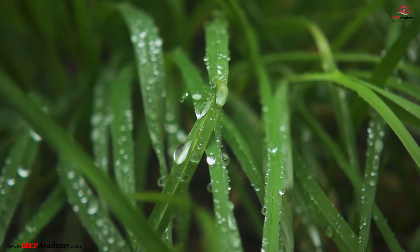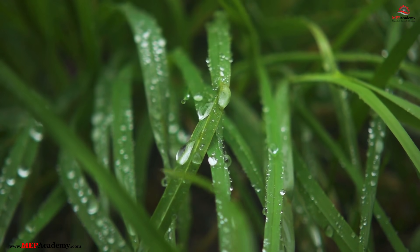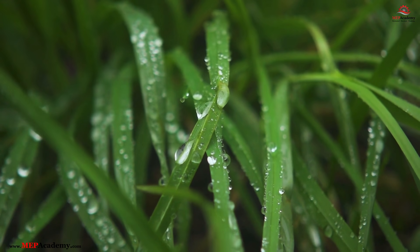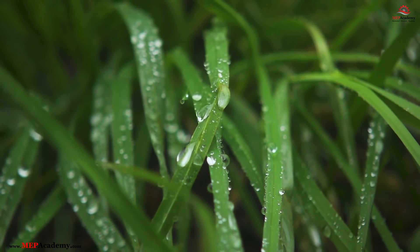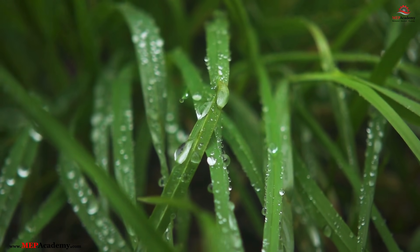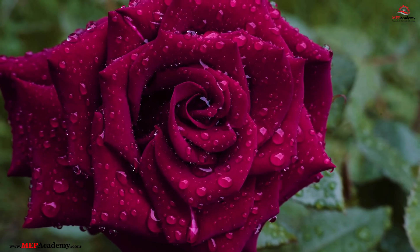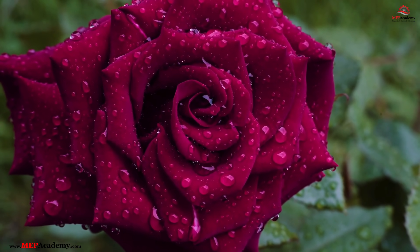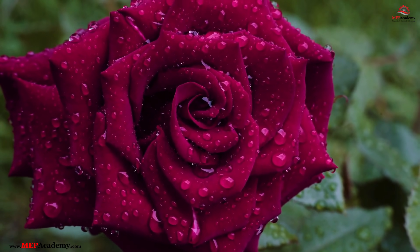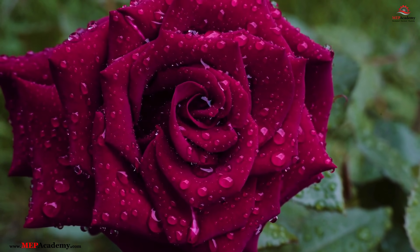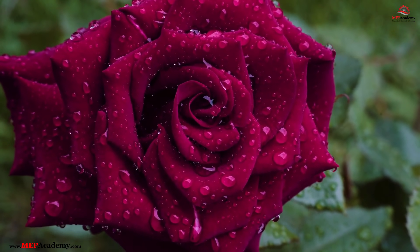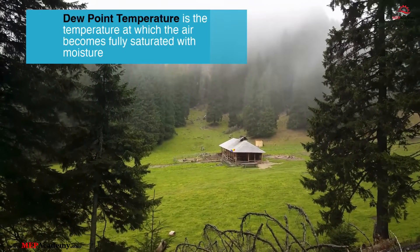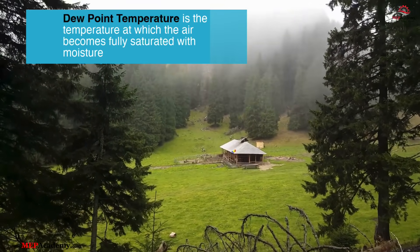In the early morning, we often see droplets of water on grass. This is called dew, and it forms when the air cools to its dew point temperature. At this point, the air is saturated with moisture, causing water vapor to condense into liquid droplets. Dew point temperature is the temperature at which the air becomes fully saturated with moisture.